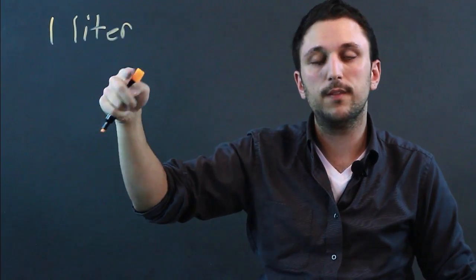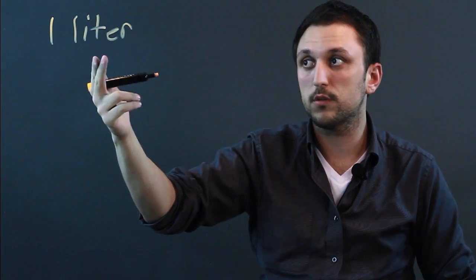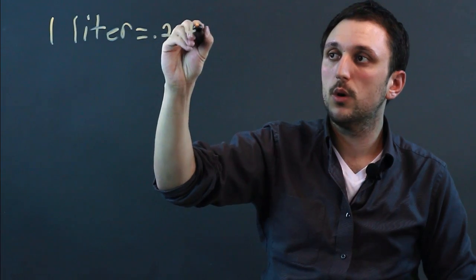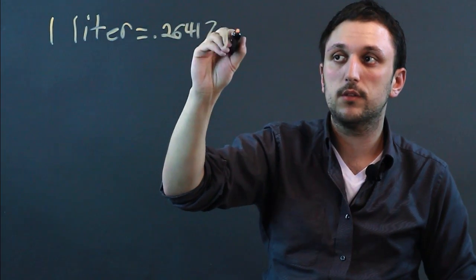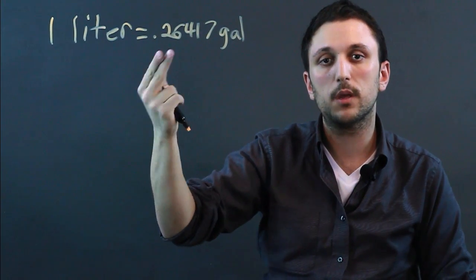So first, one liter, which is the measurement of volume in the SI or international system of measurements or the metric system, equals 0.26417 gallons, which is the measurement of volume in the imperial system or the American system.